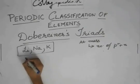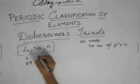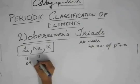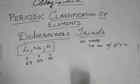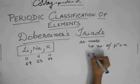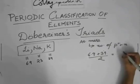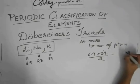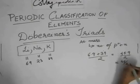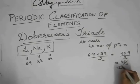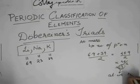So lithium's atomic mass or atomic weight is 6.9, you can consider it as 7 if you want to. Sodium is 23 and potassium is 39. So you see that 6.9 plus 39 divided by 2 will give you 45.9 by 2, or you can write it as 46 by 2, which is nearly 23. And what is 23?